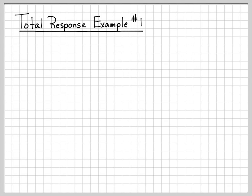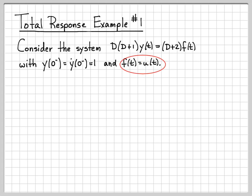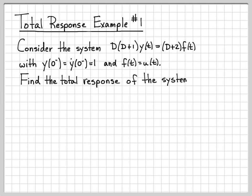In this example, we're going to be piecing together everything that we've been learning about analyzing systems in the time domain by finding the total response of a system. Here's the system we're going to work with — it's described by this differential equation. We're told some initial conditions for the system, we're also told that the input is the unit step function, and we are going to find the total response of the system.